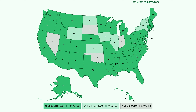About 25 to 27-ish votes for not on the ballot. Nevada with 6 votes, South Dakota with 3, so that's 9, plus 7 from Oklahoma is 16, plus 11 from Indiana would equal 27 votes not on the ballot in those four states.